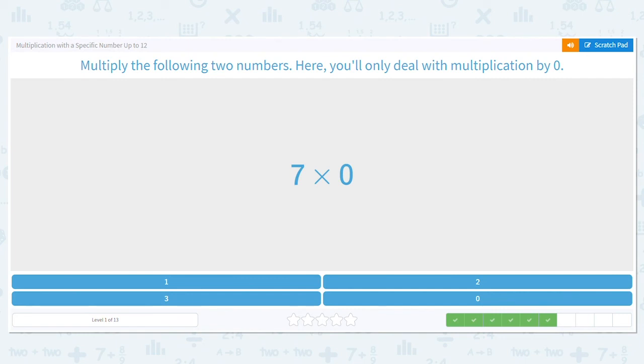Zero, zero, zero. Okay, next one. Seven times zero. What is seven times zero? Is it one, two, three, or zero?